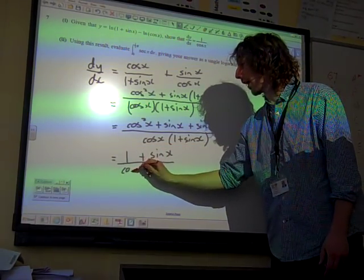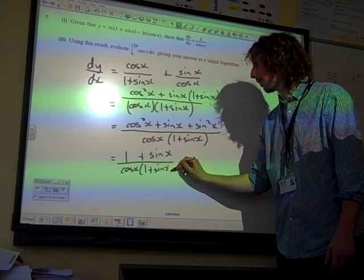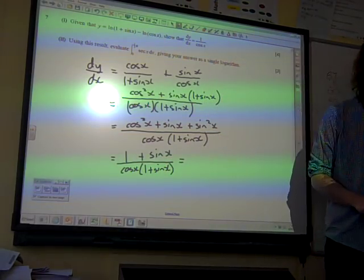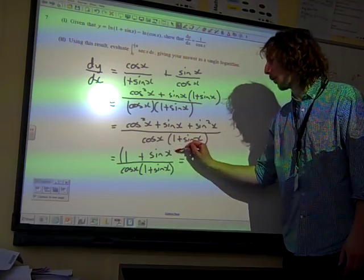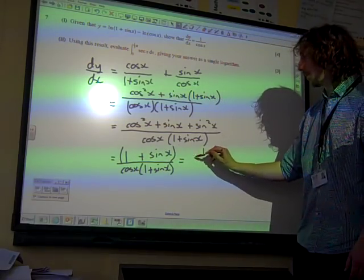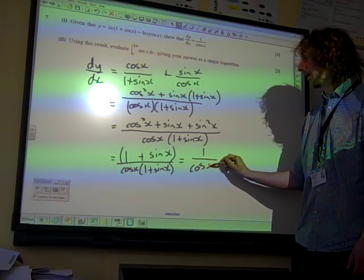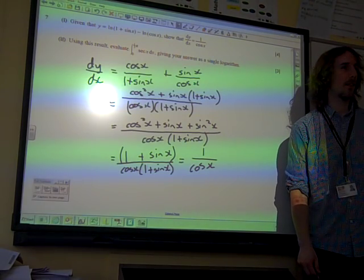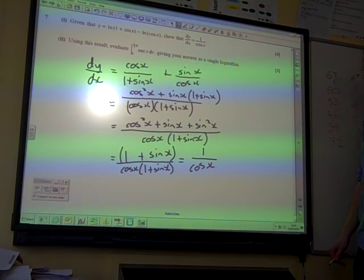The bottom line is cos x times 1 plus sine x. We've got a common factor, top and bottom of 1 plus sine x, giving us 1 over cos x, which is quite neat, I think. I quite like the way that that resolves itself quite nicely.